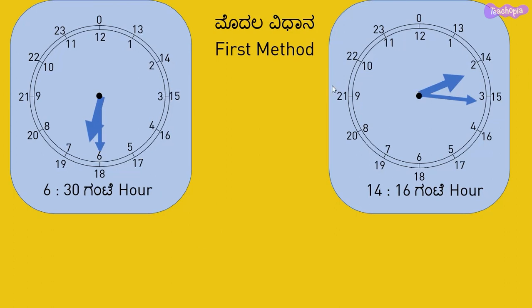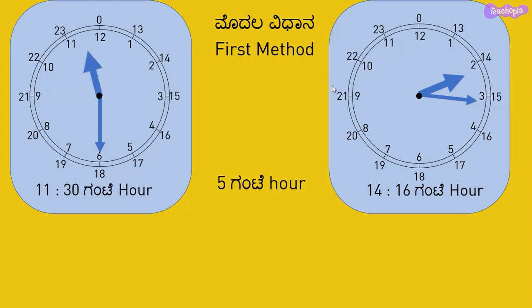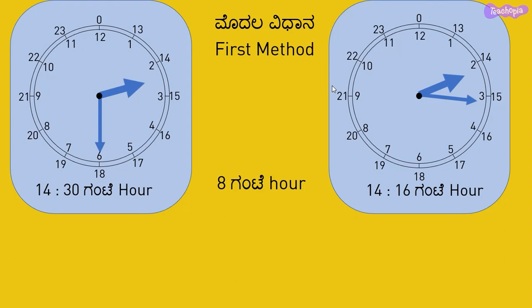We can also find the time duration in another manner. Count the number of hours in increments of 1 hour: from 6:30 to 7:30 is 1 hour, 8:30 is 2 hours, 9:30 is 3 hours, 10:30 is 4 hours, 11:30 is 5 hours, 12:30 is 6 hours, 13:30 is 7 hours, and 14:30 is 8 hours.